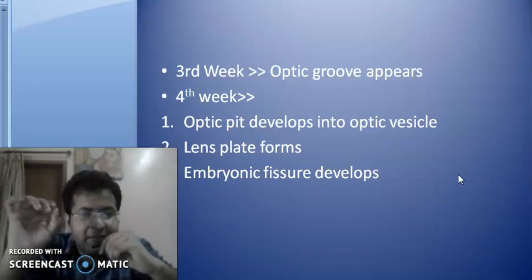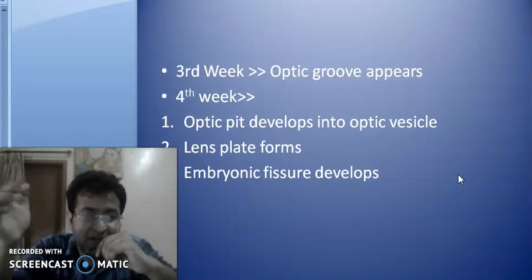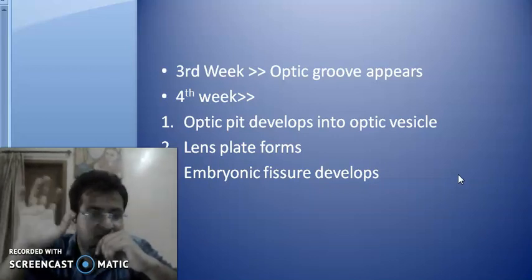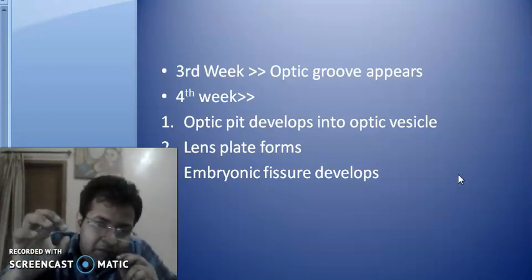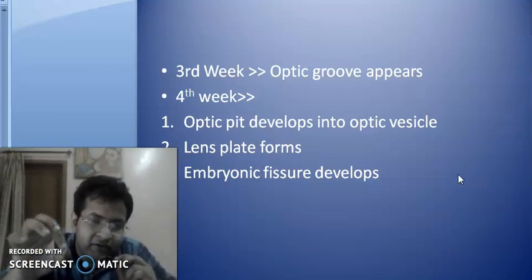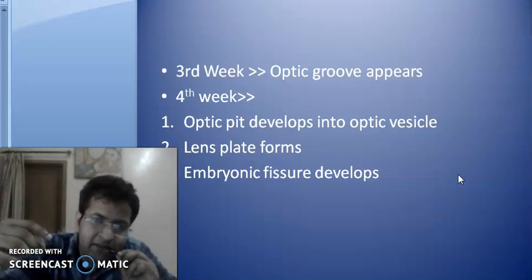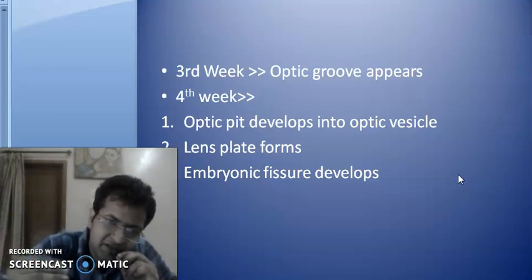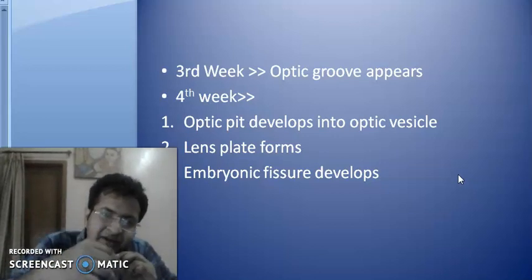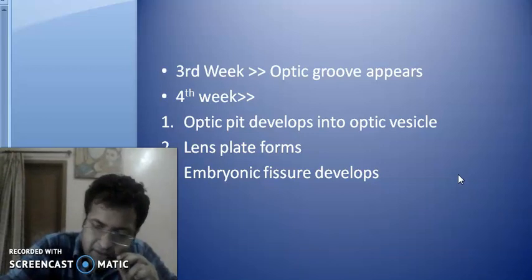At the third week, the optic groove first appears in the embryo — that is the three-layered stage of the embryo. At the fourth week, the optic pit which develops in the optic groove develops into the optic vesicle. The lens plate is formed — the thickened surface ectoderm is known as the lens plate. And then the embryonic fissure develops.